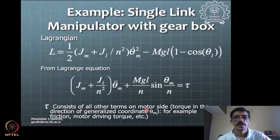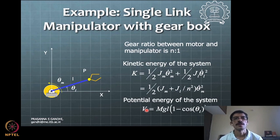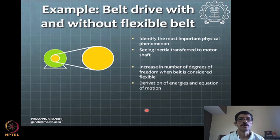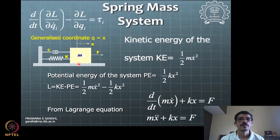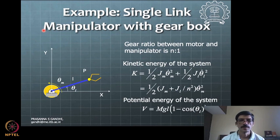Do this Lagrange formulation yourself: define the Lagrangian as kinetic energy minus potential energy, then apply the Lagrange equation. You should be able to get the equation of motion for this case. This exercise is important — once you do it you will understand how things work, and any mistakes you make along the way will get corrected so you won't repeat them.